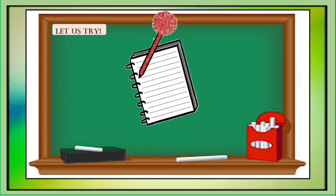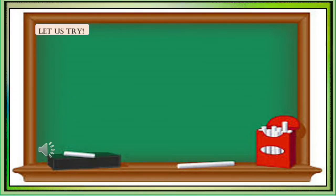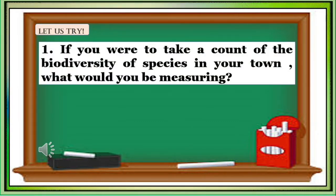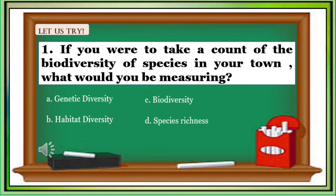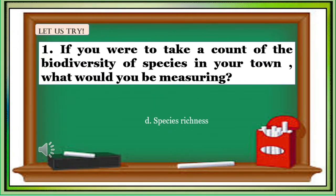Number 1: If you were to take account of the biodiversity of species in your town, what would you be measuring? Letter A: Genetic diversity. Letter B: Habitat diversity. Letter C: Biodiversity. Letter D: Species richness. The correct answer is Letter D, species richness.